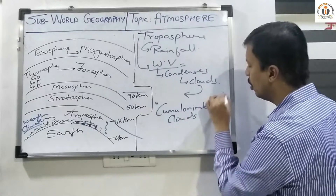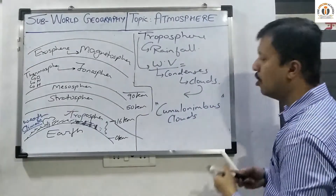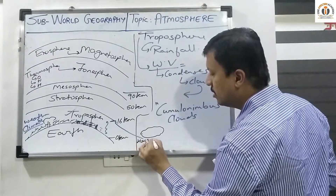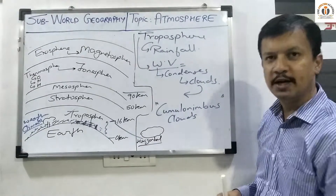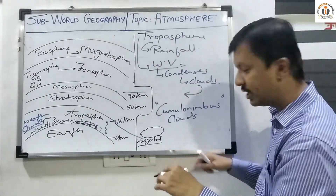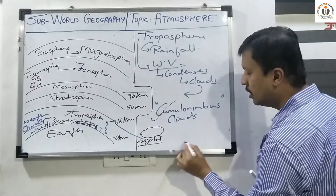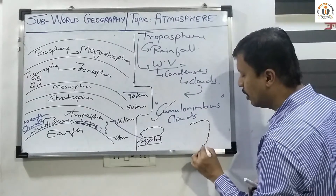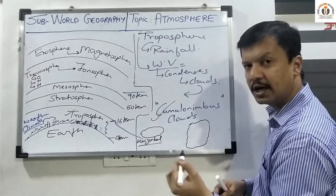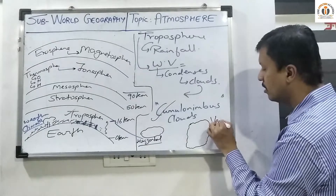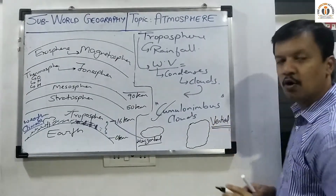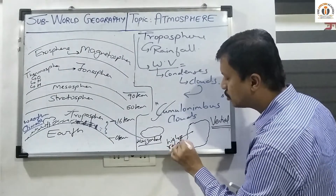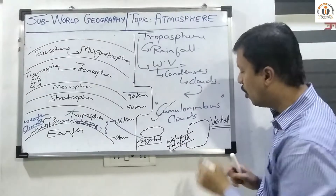All other clouds — cumulus, nimbus, stratus, etc. — are horizontal in expanse, but cumulonimbus clouds are formed because of convectional air currents. Cumulonimbus clouds are large, dark gray colored clouds which are vertical in their orientation. These clouds bring high rainfall along with them, and are associated with lightning and thunderstorms.